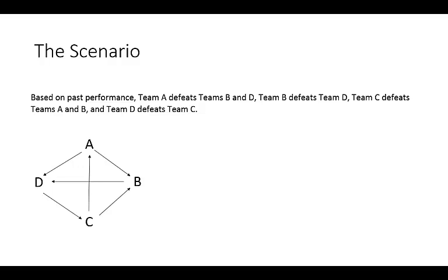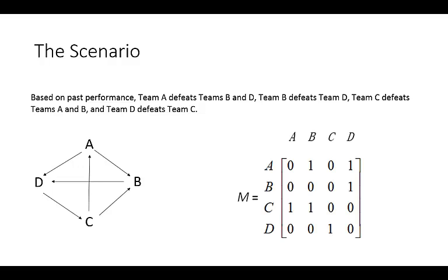Now we can take that information and put it into a matrix. So the dominance matrix M, we represent like this, where each defeat or each victory is coded as a 1 or a 0 in the matrix. So this element here, element 1,2, indicates that team A defeats team B. So that corresponds to that relationship there.